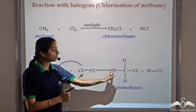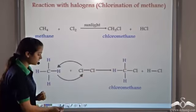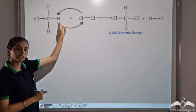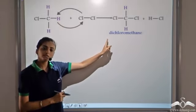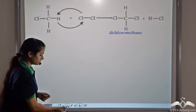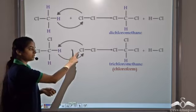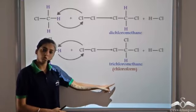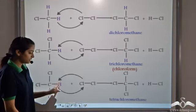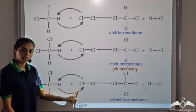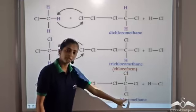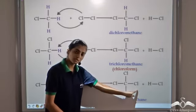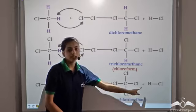This process continues as long as hydrogen atoms remain. Chlorine reacts again — one chlorine atom replaces another hydrogen atom, forming dichloromethane and liberating HCl. In the next step, one more hydrogen atom is replaced by another Cl, giving trichloromethane, also known as chloroform. In the last step, the final hydrogen atom is replaced by a chlorine atom, giving tetrachloromethane. So all the hydrogen atoms of methane are substituted by chlorine atoms, and HCl is liberated at each step.